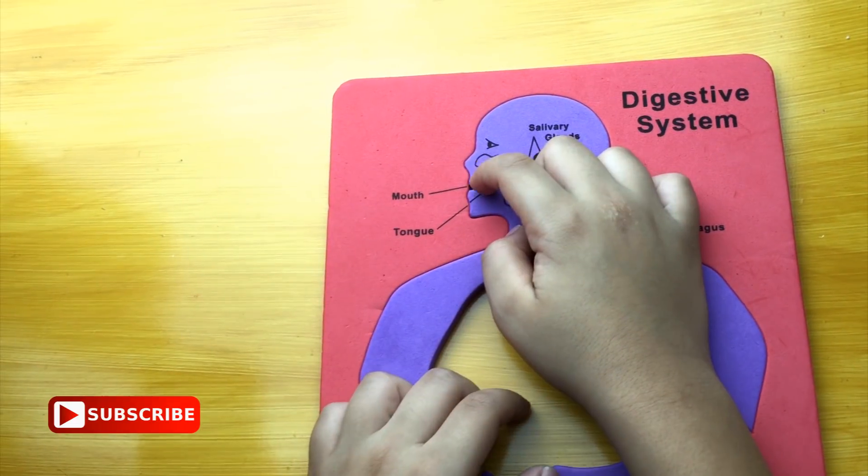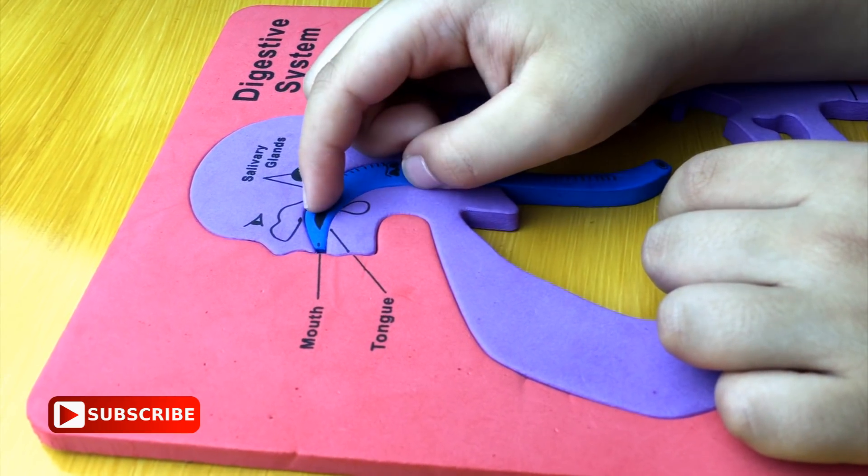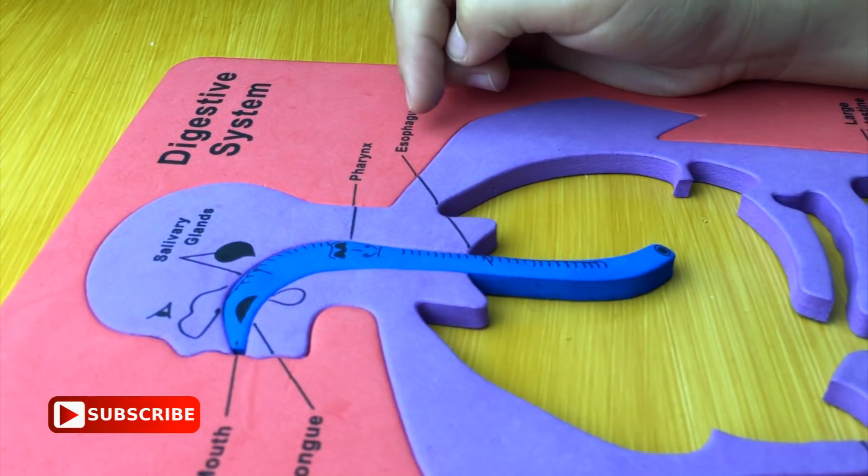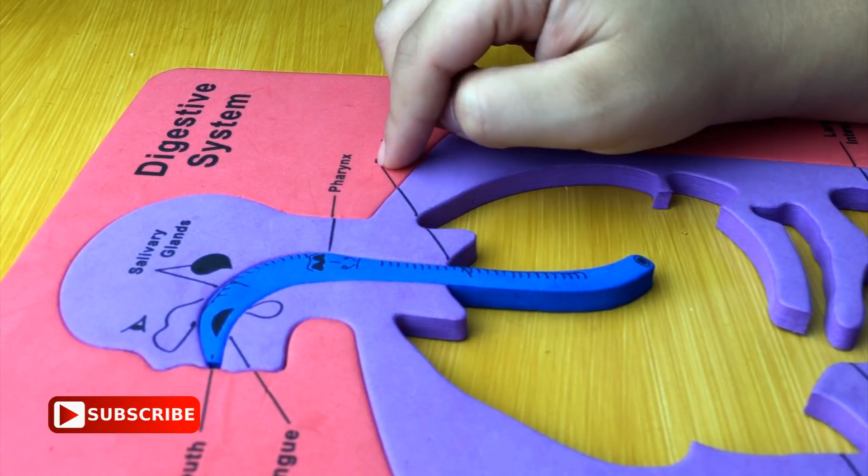This is mouth. This is tongue. This is pharynx. This is esophagus.